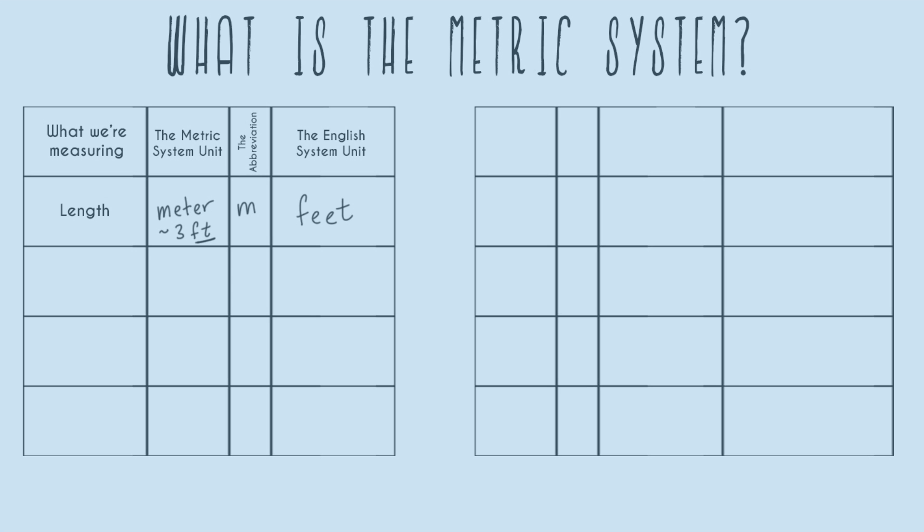Next, we're going over mass. In physics or chemistry classes, they'll say mass is different from weight — mass doesn't involve gravity, whereas weight does. But for most science class problems on Earth, you can think of them as the same thing. In the English system, you'd give your weight in pounds. In the metric system, we use grams.